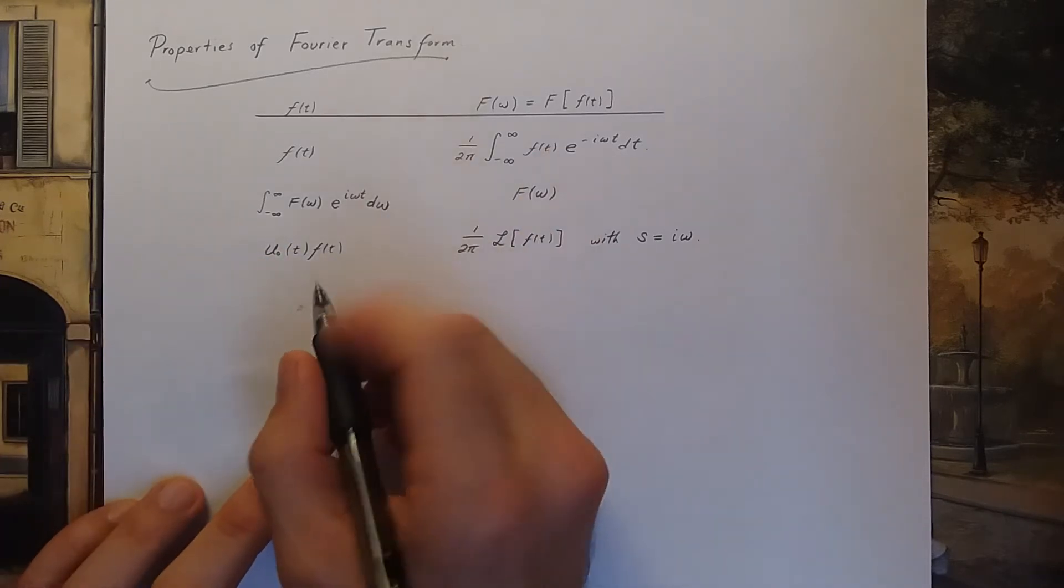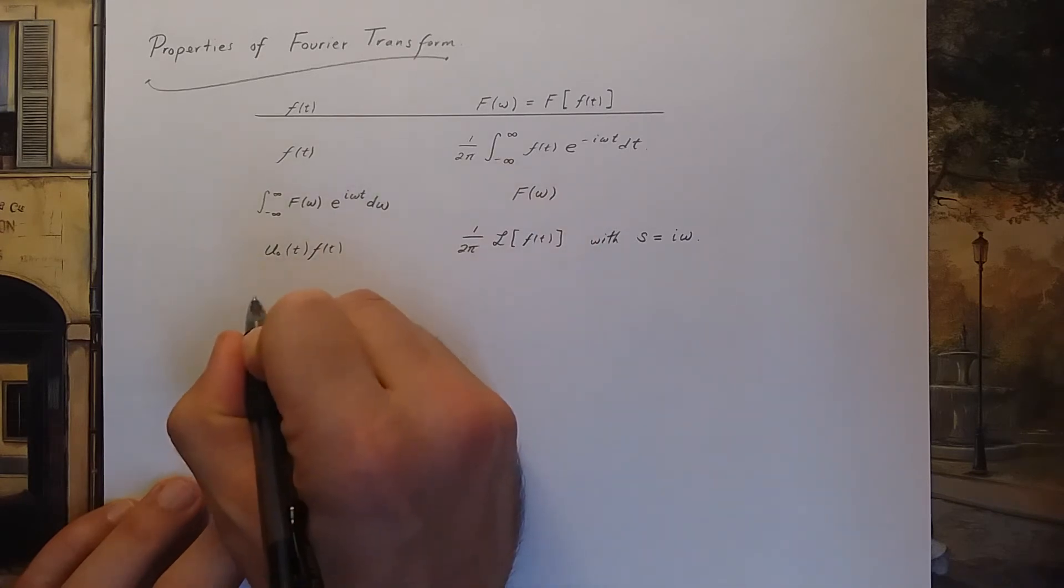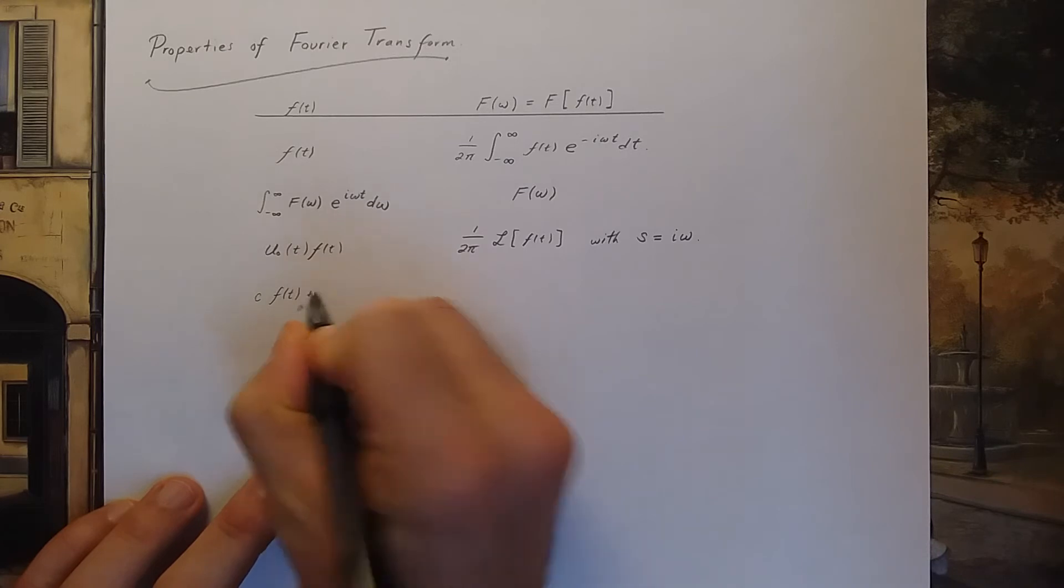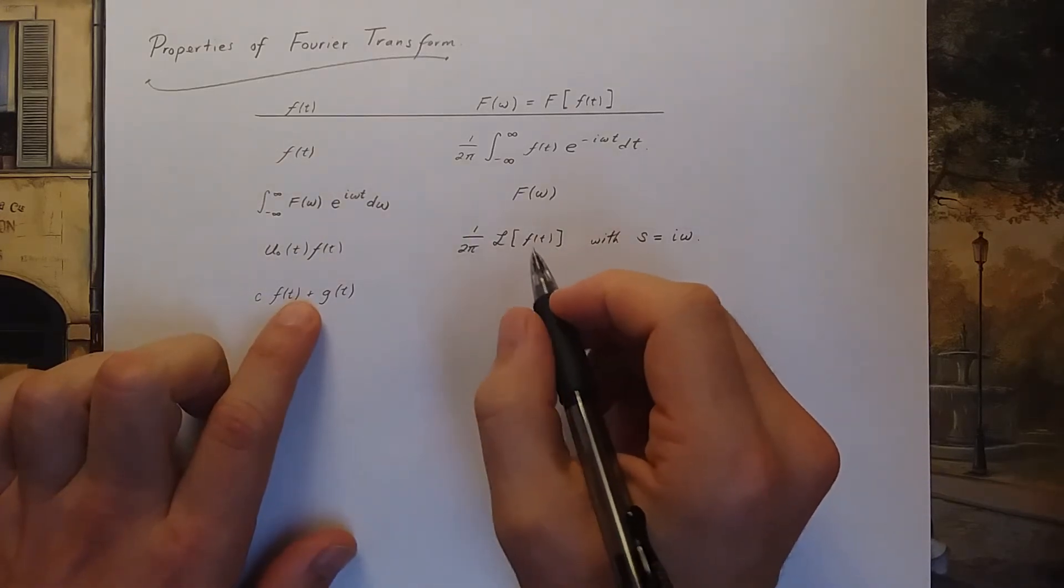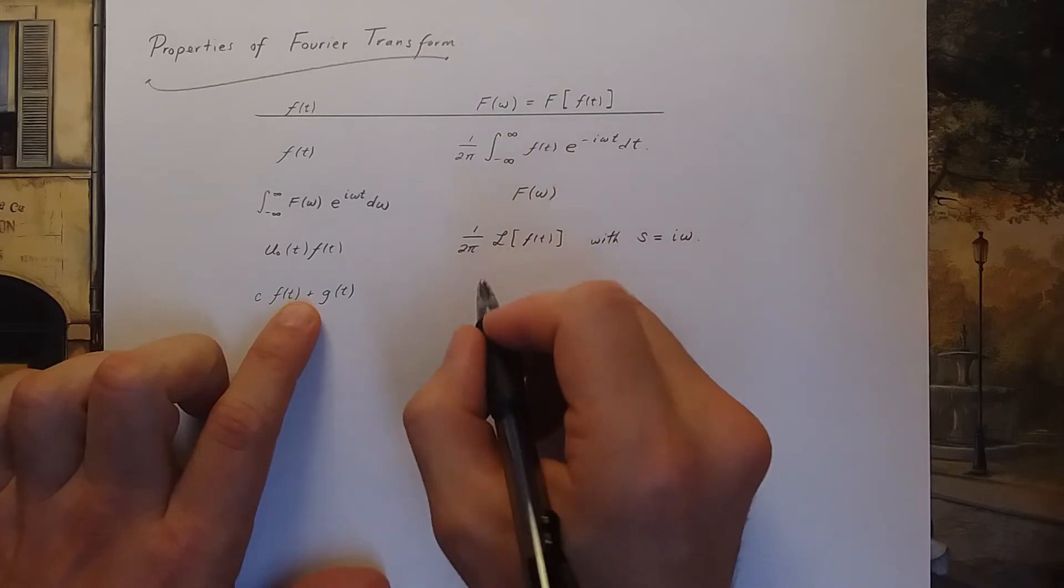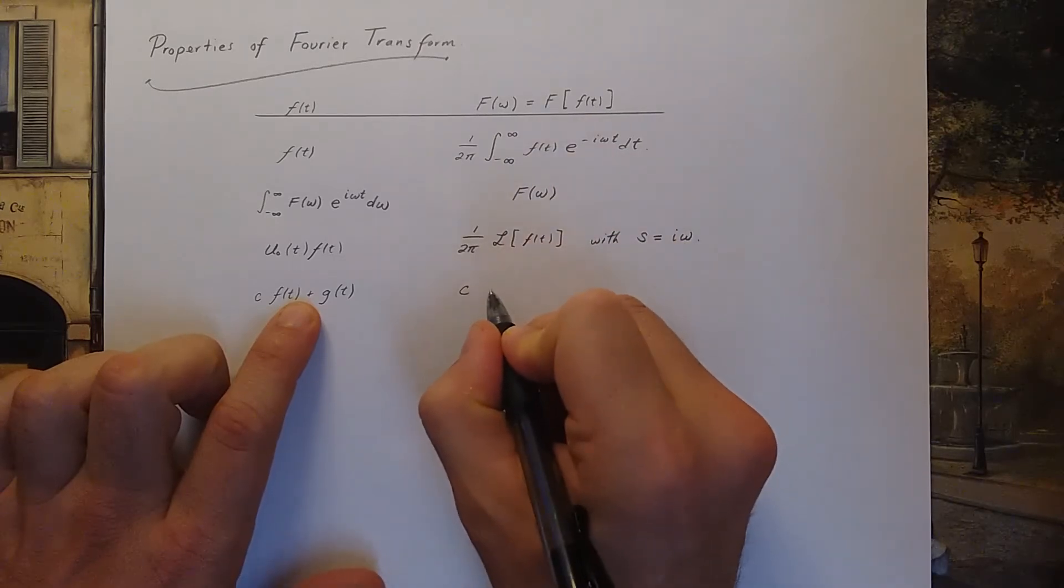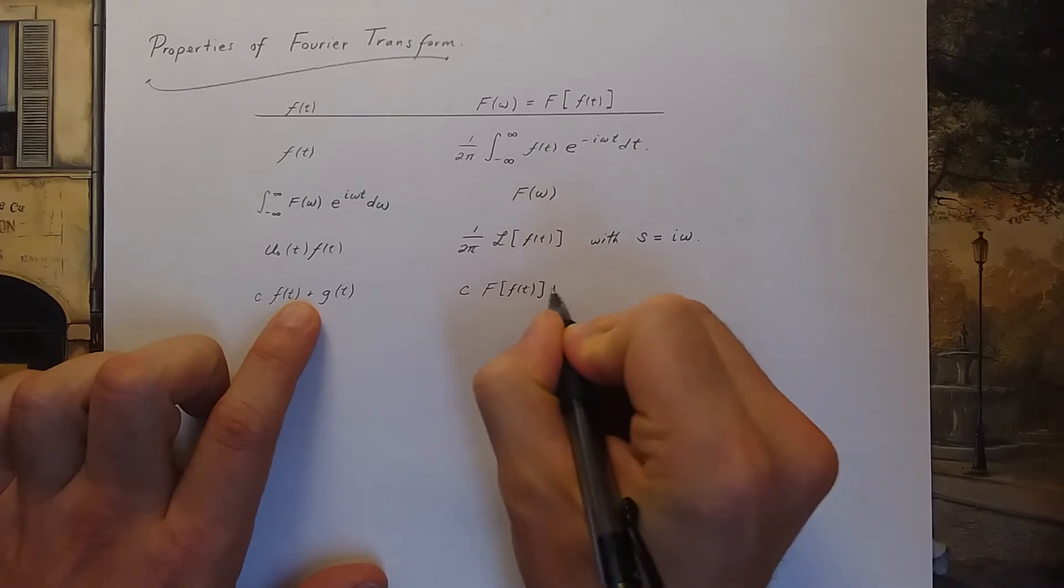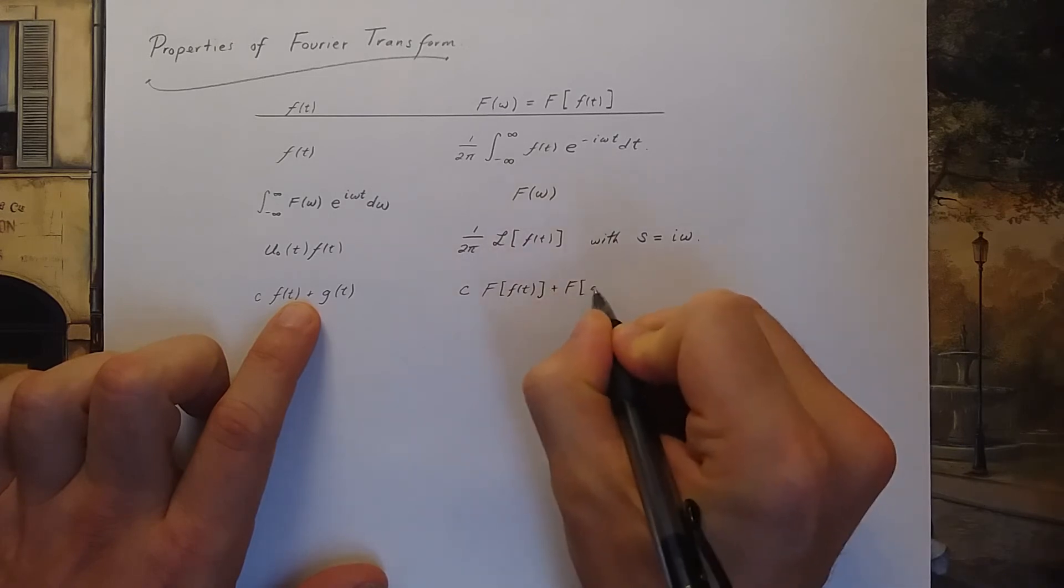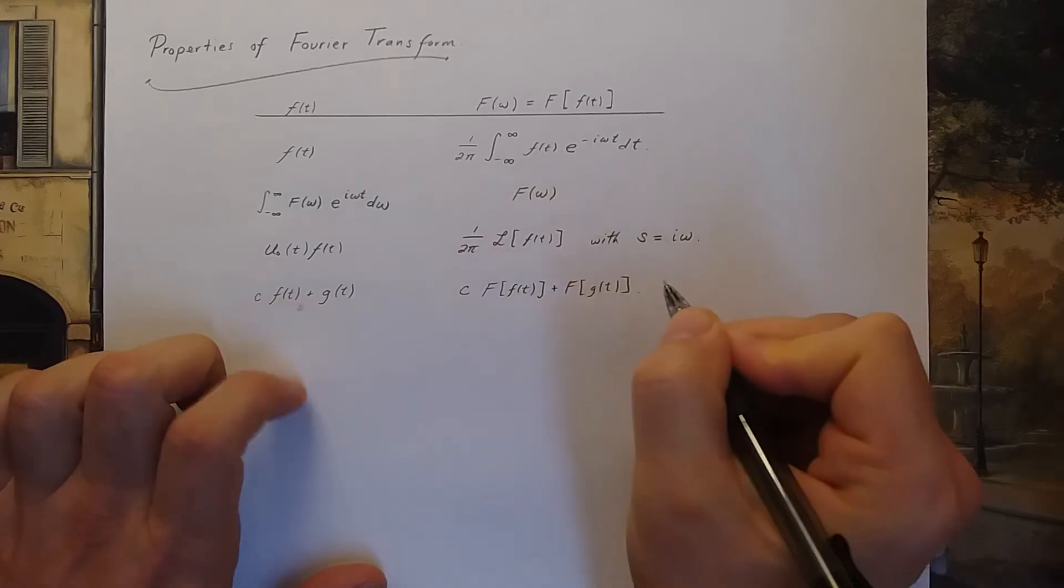It also obeys the usual linearity property so c times a function plus another function, that taking the Fourier transform can be split into parts this way. That's the linearity property.